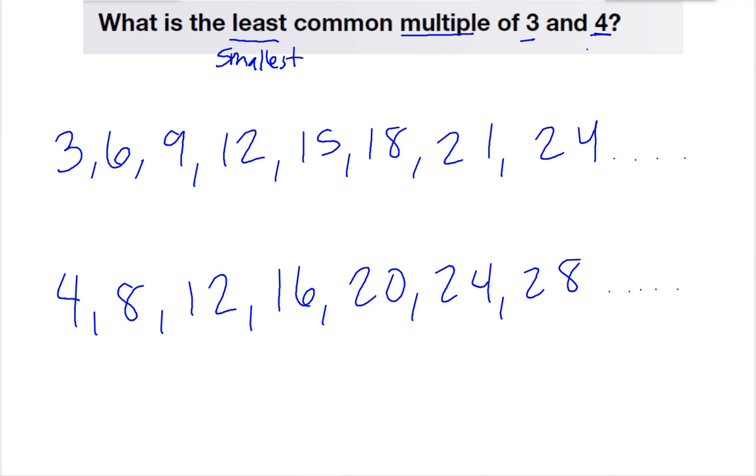All right, so let's go ahead and circle the common multiples. So our common multiples are 12 and 24.